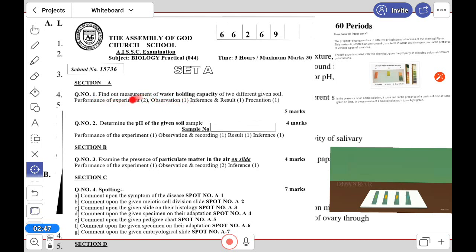The performance of the experiment is 2 marks, observation and inference are 2 marks, result and precaution are 1 mark, total 5 marks. Question number 2, almost every year you will get one question to determine the pH of a given soil or water sample. A certain sample number will be given to everybody. Performance of the experiment is 1 mark, observation, recording, result, and inference are 3 marks that you will write in your board exam copy, for a total of 4 marks.